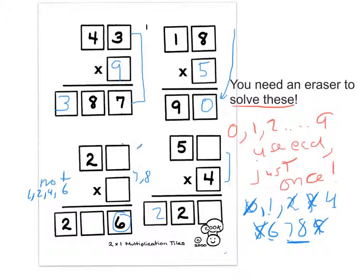We know the 7 and 8 have to be here, but if we use the 8 up here and the 7 down here, we get 140 plus 56, which is 196. That's not enough. So the 7 has to go here and the 8 goes here. 8 times 20 is 160, 8 times 7 is 56, and 160 plus 56 is 216. So we've used our 7, our 8, and our 1.